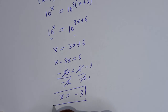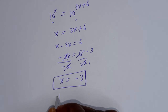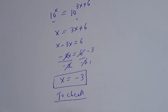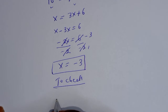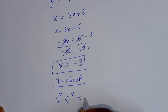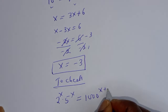This is the final answer. We can check to confirm if our answer is right or wrong. To check, we have the given equation: 2 raised to power s multiplied by 5 raised to power s must be equal to 1000 raised to power s plus 2.